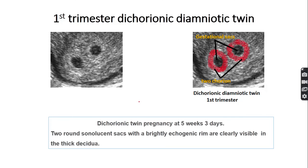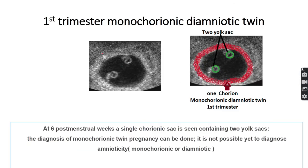The sonographic feature of the first trimester: in dichorionic diamniotic twin pregnancy, you see two gestational sacs each surrounded by a bright echogenic area due to the chorion. In monochorionic diamniotic twin pregnancy, a single gestational sac is seen surrounded by a bright echogenic area — a single chorion — and within the gestational sac, two yolk sac cavities are visible.